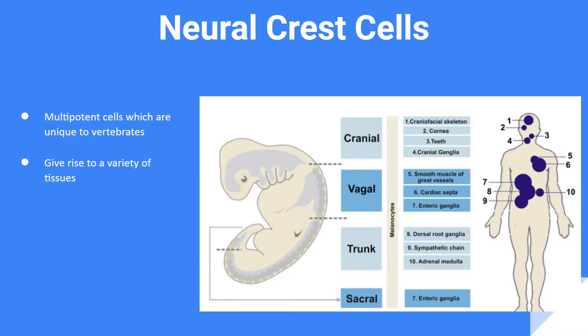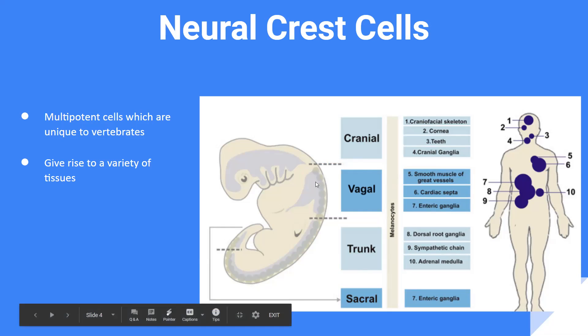This, however, will depend on two things: where along the embryo they are located — whether they are cranial, vagal, trunk, or sacral — and it would also depend on their subsequent migratory pathways.